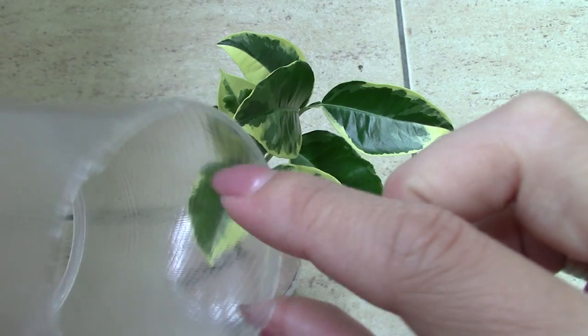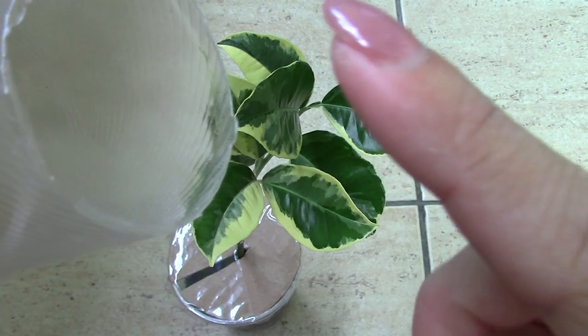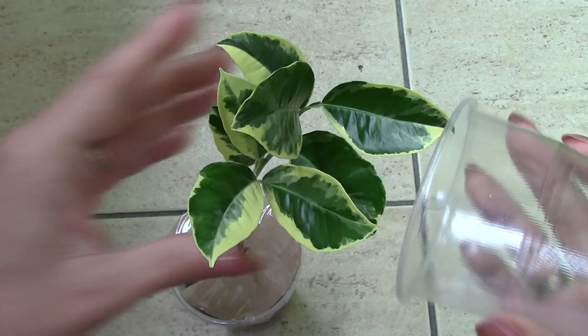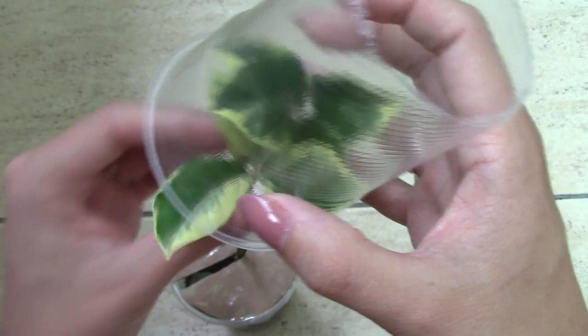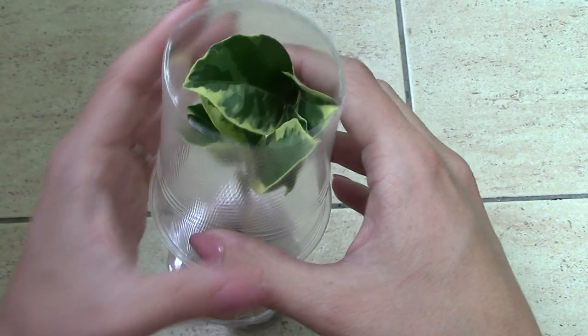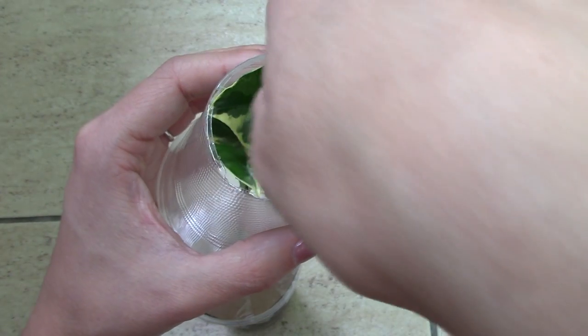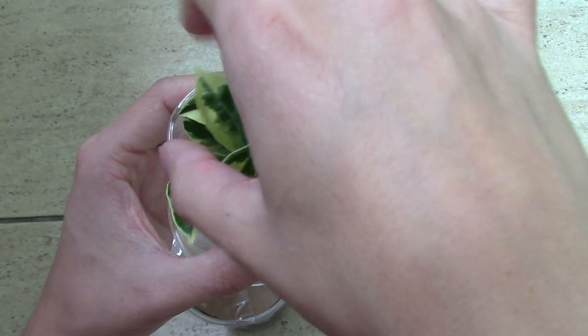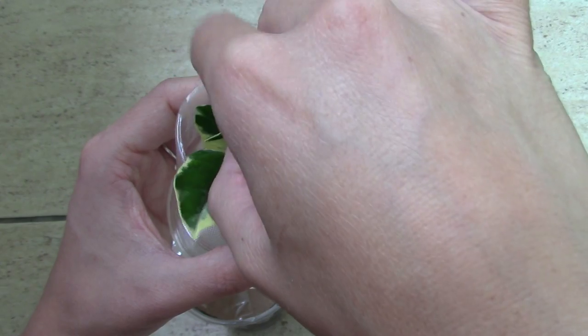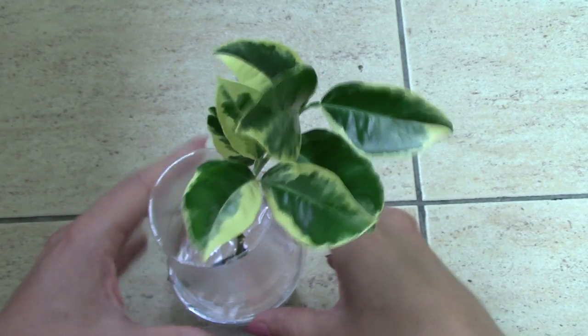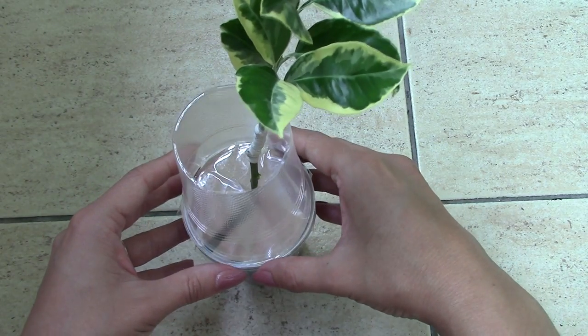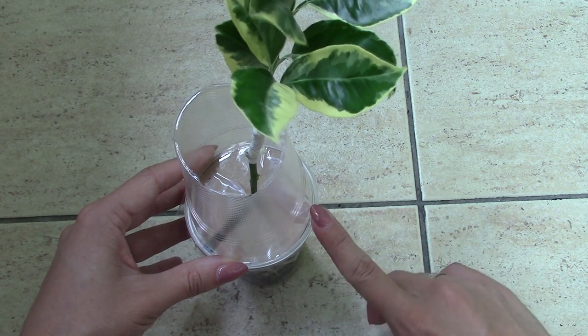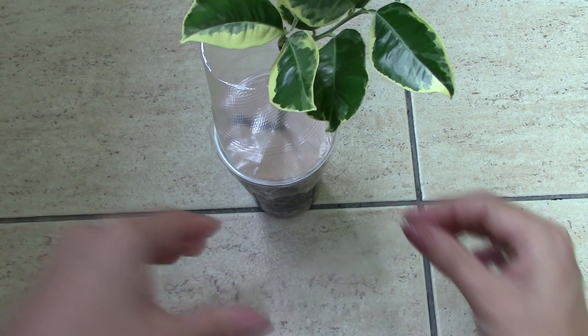And after I've cut the bottom part, I put it on my paper. Now I'm going to put it on my plant like this and fix this part also with scotch tape.